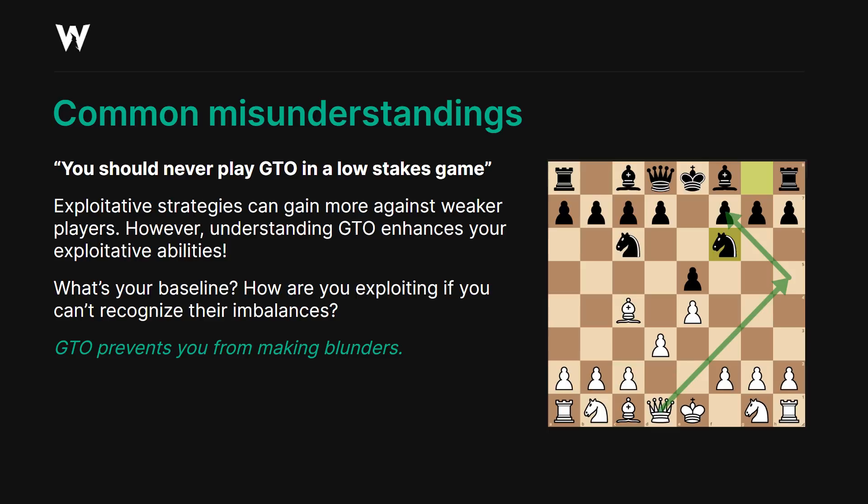Some people say you should never play GTO in a low stakes game. While it's true that exploitative strategies have more potential to gain versus weaker opponents, those weaker opponents will also make more pure mistakes against the GTO strategy. Both are winning against weaker opponents — it's just a matter of how much they're winning by. Understanding GTO enhances your exploitative capabilities. What's your baseline? How are you exploiting if you can't recognize their imbalances?